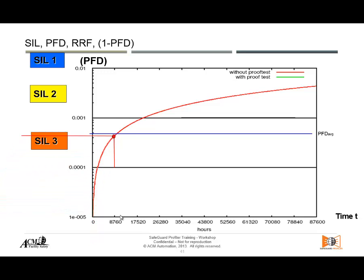The graph shows again that if we don't do anything to our equipment, the probability of failure on demand — which was at a high SIL 3 when proof testing was being done — will go higher if left untouched. These graphs are examples to show what is possible and how probability of failure on demand relates to a SIL level.